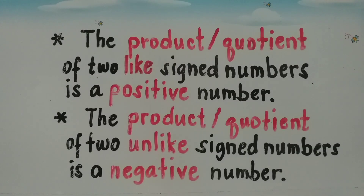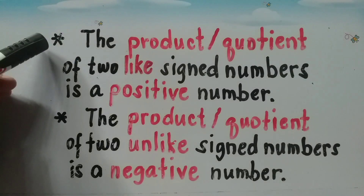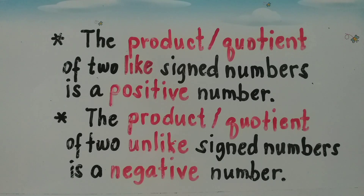Let us talk about multiplication and division of integers. To find a product or quotient of two signed numbers, we have only two rules to follow. The first rule is: the product or quotient of two like-sign numbers, or two numbers with the same signs, is a positive number. The second rule is: the product or quotient of two unlike-sign numbers, or numbers with different signs, is a negative number.